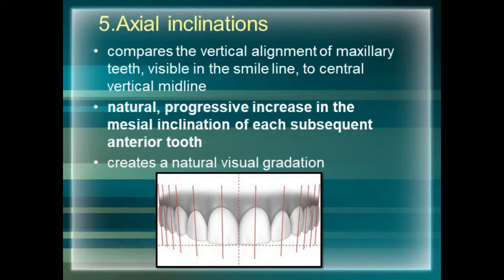The fifth component we are going to discuss is axial inclination. It is a comparison between the vertical alignment of the maxillary teeth to that of the vertical midline. As we go from the midline towards the canine, we can see a natural progressive increase in the mesial inclination of each subsequent anterior tooth. The maxillary central incisors are positioned vertically with a slight labial tilt.